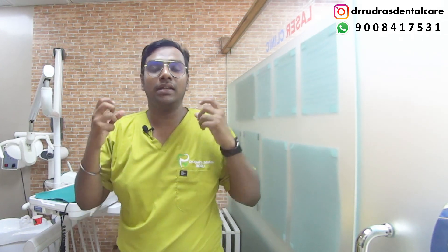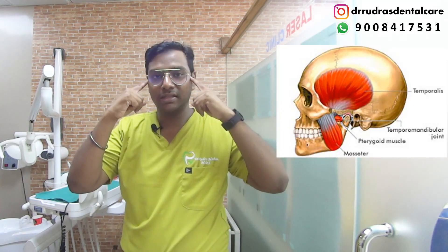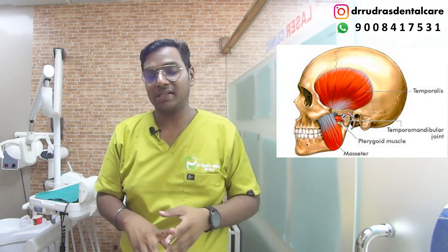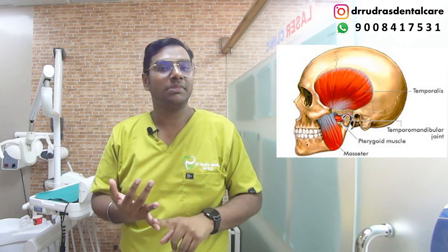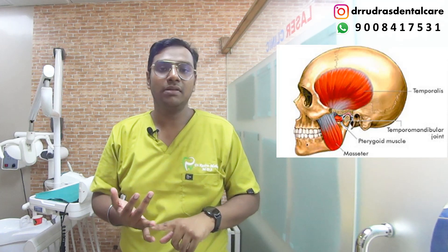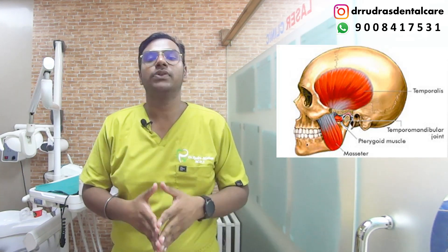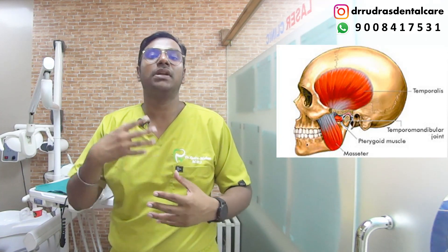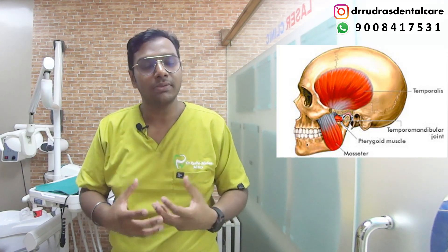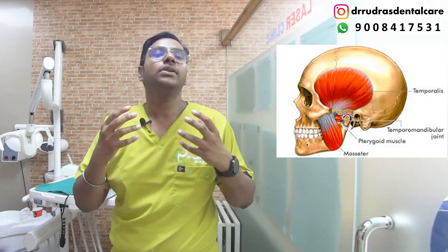This encompasses the temporomandibular joint and it's a part of the temporomandibular disorders. It encompasses the muscles of mastication — mainly your lateral and medial pterygoid muscle, masseter muscle, and temporalis muscle. This is known as a syndrome because it is a multitude of symptoms that are very similar to each other.